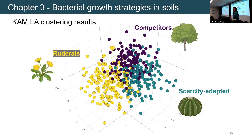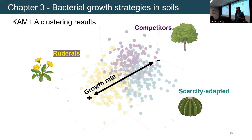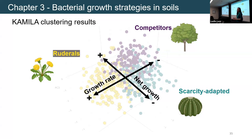To my surprise, it actually works out. In the purple cluster, there was a lot of information pointing towards a competitor-like lifestyle, and the other clusters worked out as well. I've changed stress-tolerator to scarcity-adapted, because for bacteria the stress we're thinking about is actually lack of resources. To sum up the differences: ruderals have really high growth rates, while competitors and scarcity-adapted bacteria have slower growth rates. Net growth is very high for ruderals and competitors — when they grew, they grew a lot — while growth is very low for the scarcity-adapted ones.